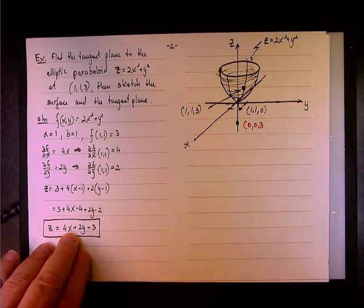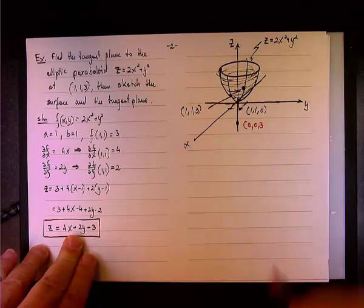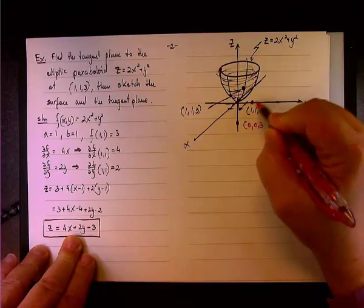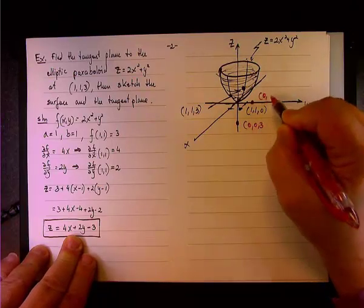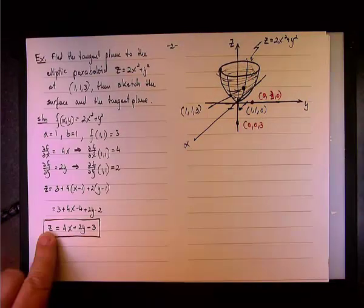When x equals 0, then 2y and z equals 0, then the intercept on the y axis will be 2y minus 3 equals 0. Y equals 3 over 2, or 1 and a half. So, another point is right here, 0, 3 halves, and 0.